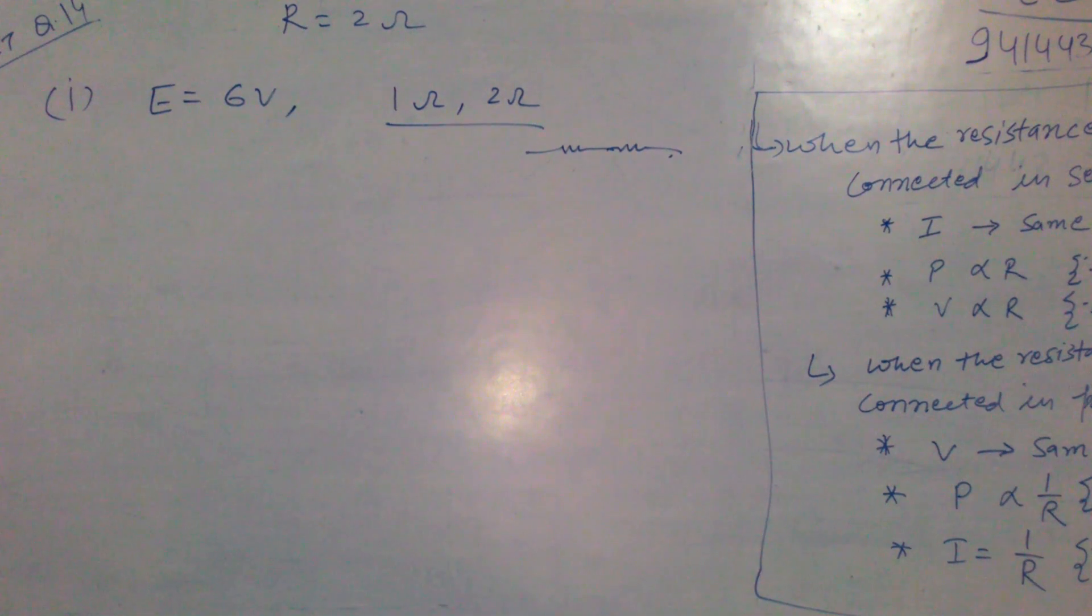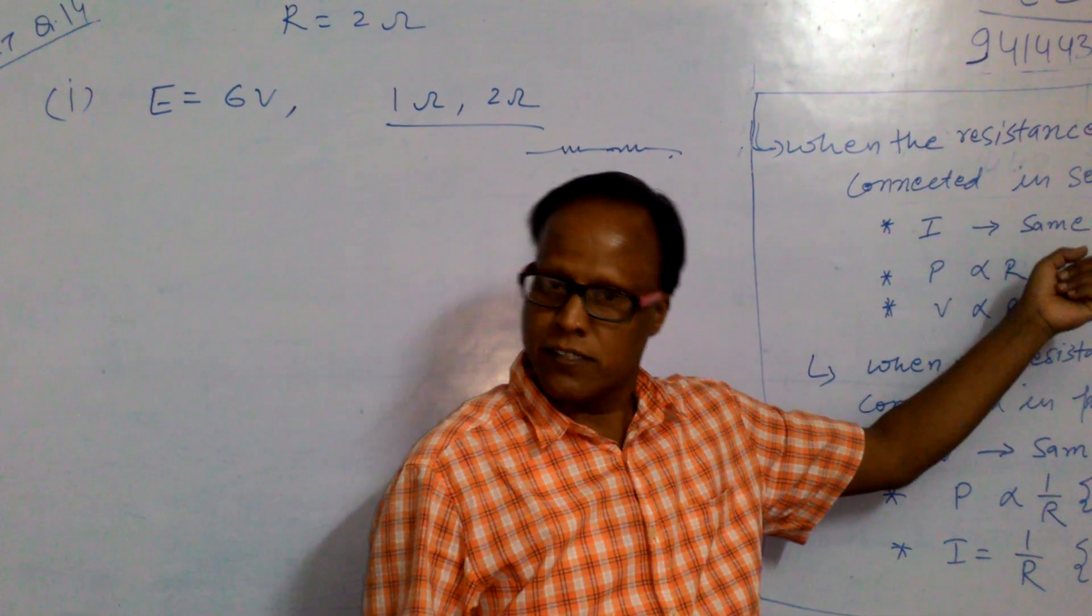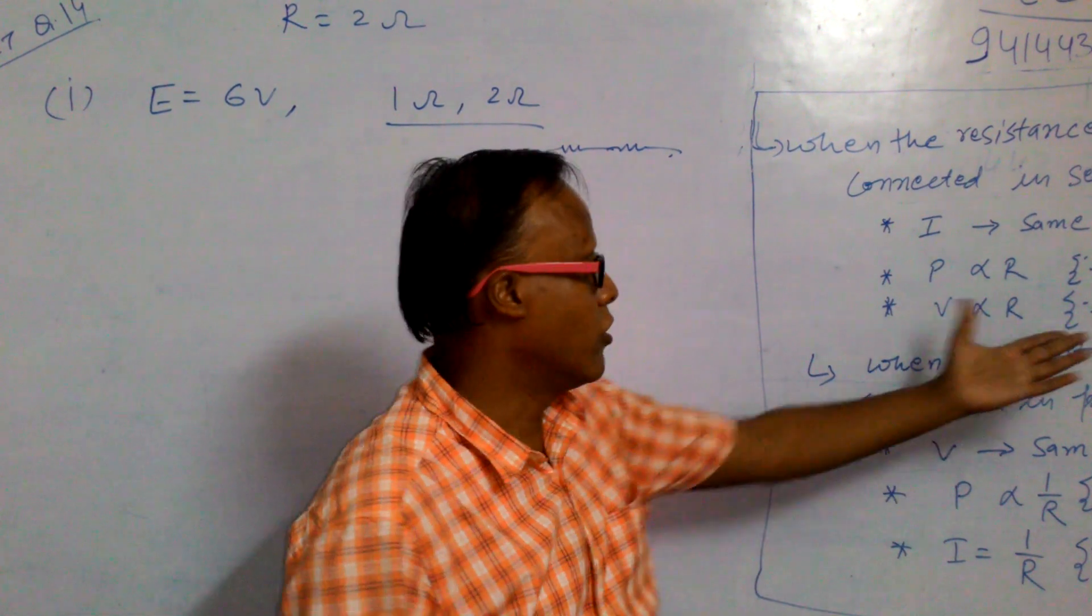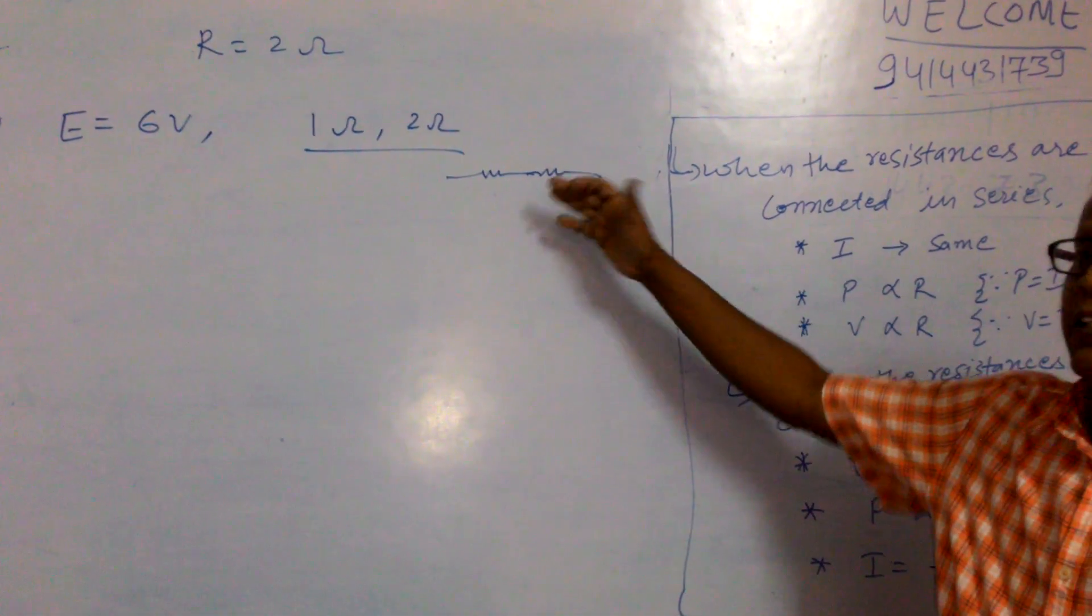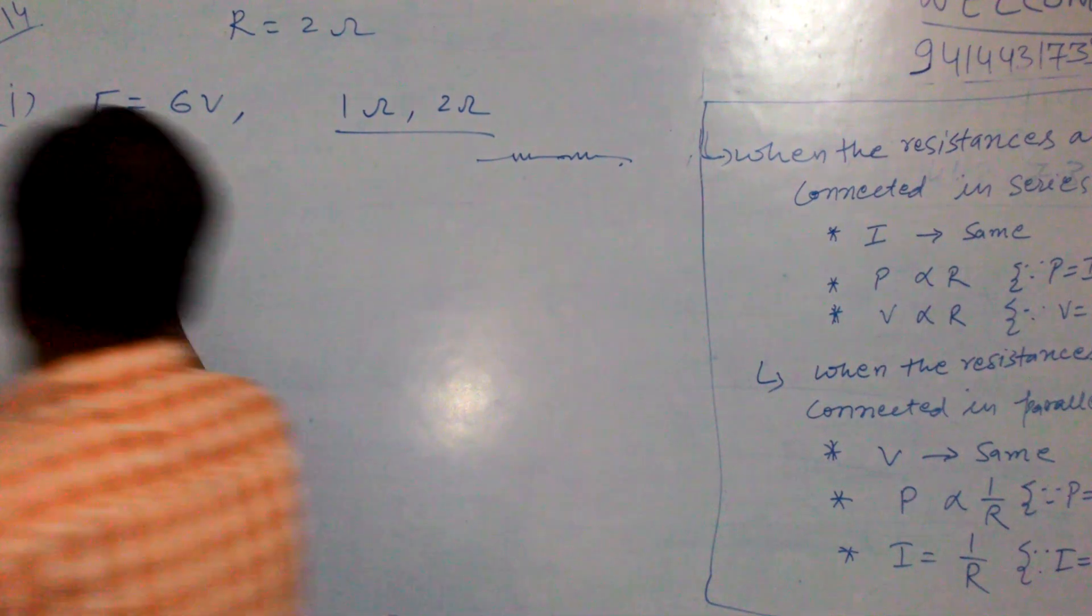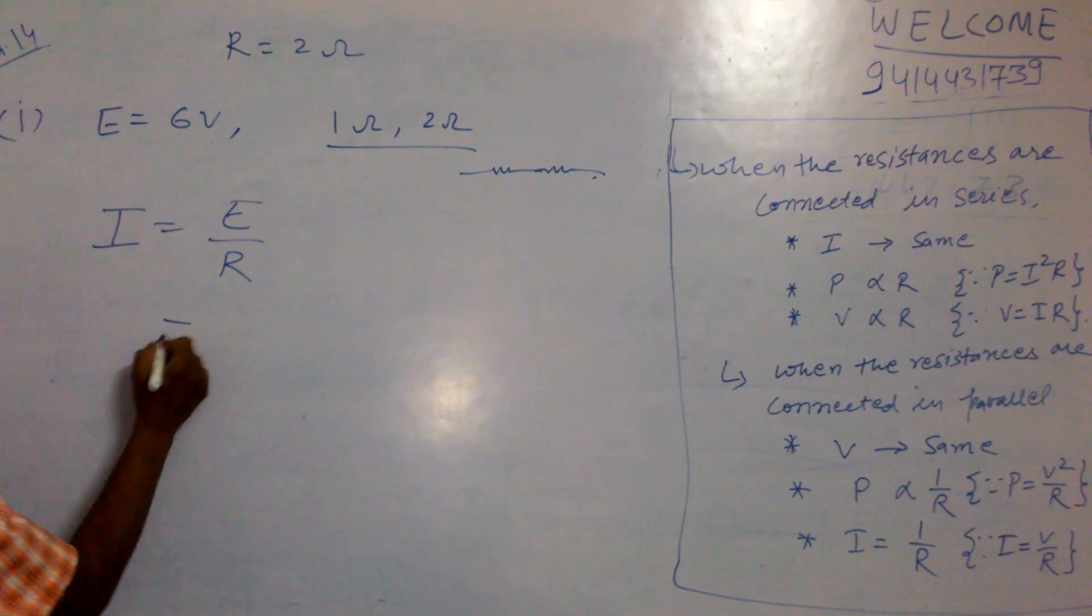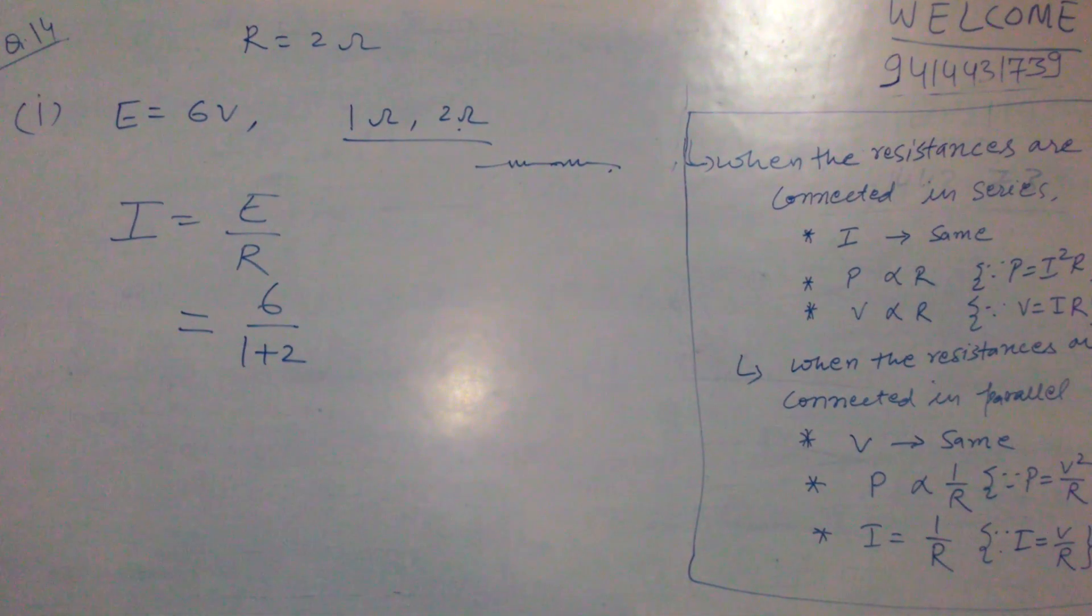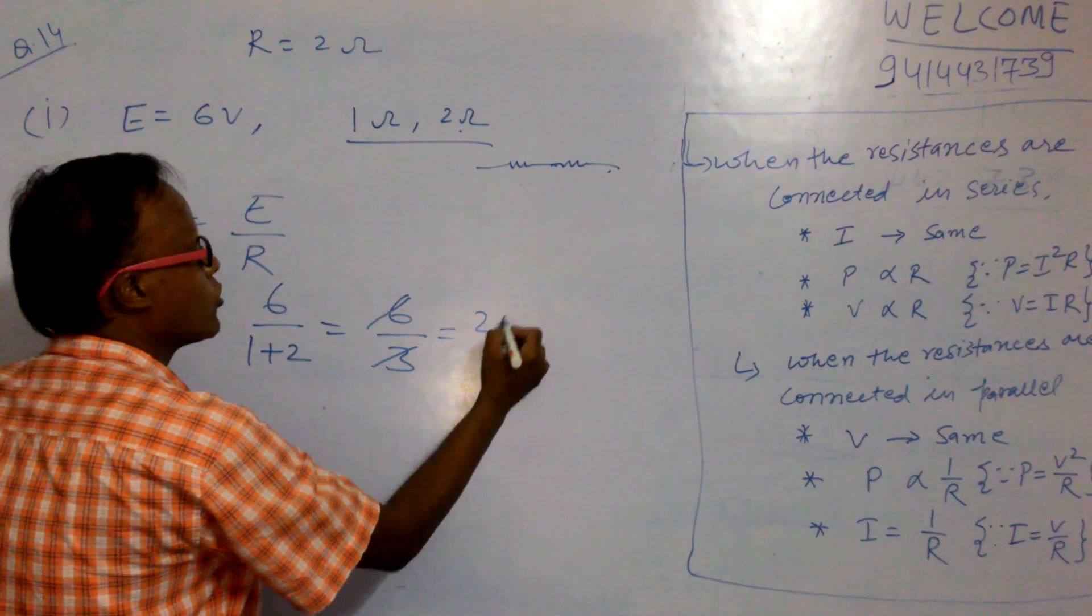R is equal to 3 ohm. Now it is in series, so therefore I is same. Power we calculate by using formula I square R. The current in this circuit is given by, according to Ohm's law, I is equal to E upon R. Here E is 6 volt and R is 1 plus 2. This is equal to 6 upon 3, which equals 2 ampere.